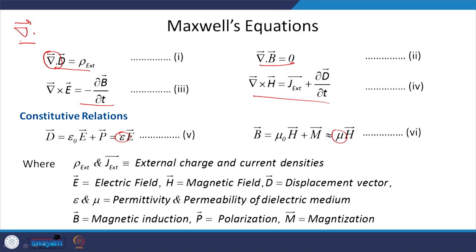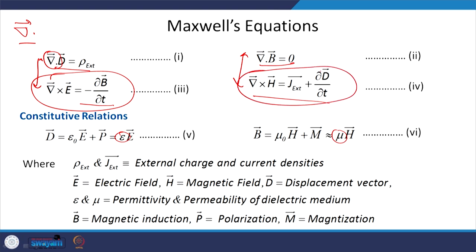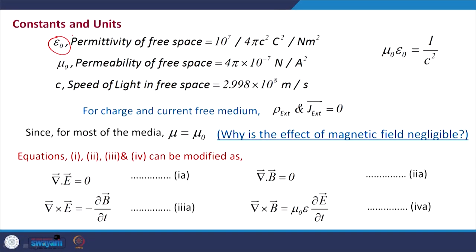Two of these relations come from electricity and two from magnetism. There was a missing gap which Maxwell fixed: a changing magnetic field produces an electric field, and a changing electric field produces a magnetic field, and this keeps on changing only at a particular speed — the speed of light. The constants are: epsilon_0, the permittivity of free space; mu_0, the permeability of free space; and c, the speed of light.